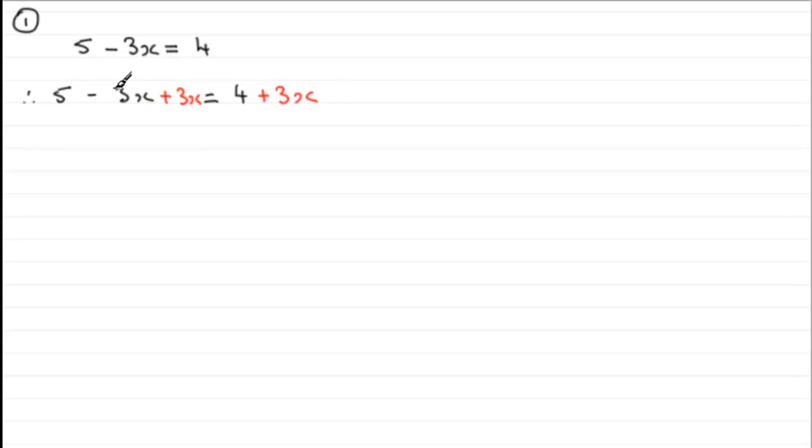So minus 3x plus 3x gives us no x or nothing, and 5 then plus nothing is just going to leave us with the 5. So we therefore have 5 equals 4 plus 3x.